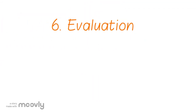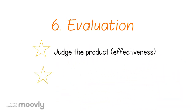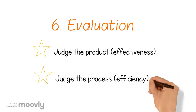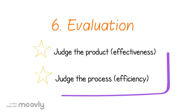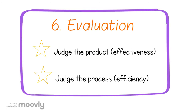Step 6: Evaluation. Judge the product for effectiveness and judge the process for efficiency. Ask yourself: Did I solve the problem? Did I write the project in a format that it will be understood? Did I complete all parts of my assignment? Did I meet all the requirements on the rubric? Am I proud of my work? What should I do differently? And how can I do things better next time? Each assignment and research project you do will allow you to improve your own research process, so that next time it's an even easier process for you.